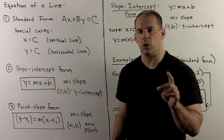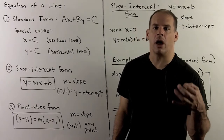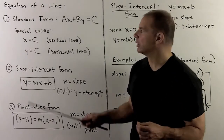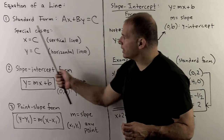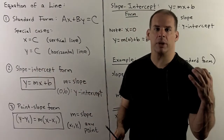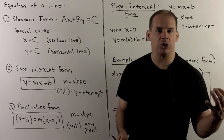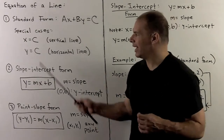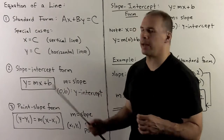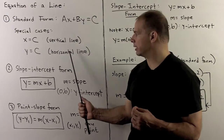Now that we have an idea of how slope works, let's take a look at other forms for the equation of the line. We've already seen the standard form: ax plus by equals c. We have special cases: x equals c gives a vertical line, y equals c gives a horizontal line.